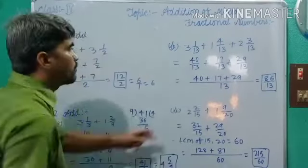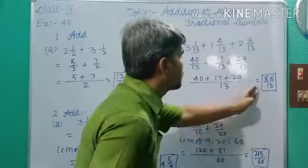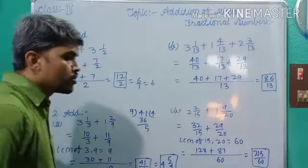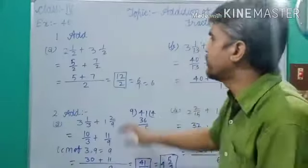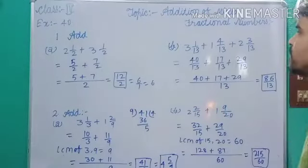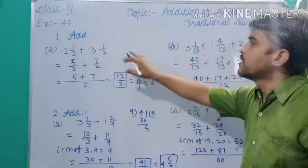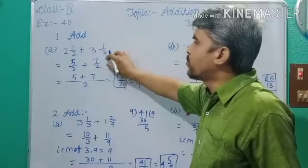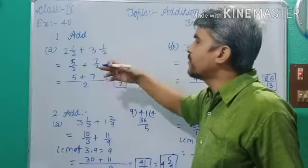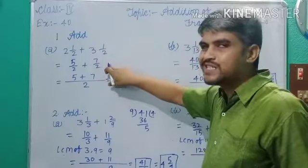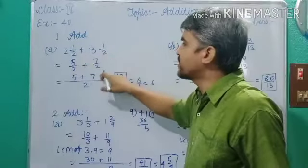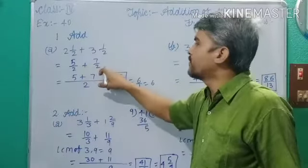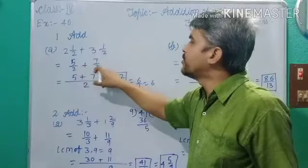Dear students, you convert such problems like this. In the first type of question, the mixed fractions are converted into improper fractions and they turn out to be like fractions, which is easy for you. Because there is no need to find the LCM — the denominators are the same.